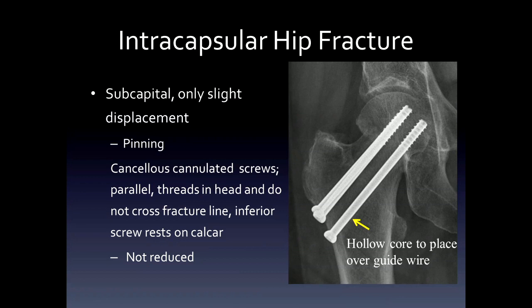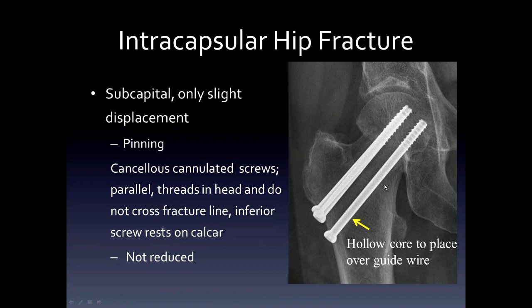We're going to go through a few hip fractures because that's commonly seen. In this case of an impacted valgus impacted fracture, you can see the use of cannulated cancellous screws. These screws are parallel in position, put in over guide wires, and the threads do not cross the fracture site. The inferior screw is supposed to rest on the femoral calcar. Notice that the fracture itself is sometimes not reduced because this is a position of stability.